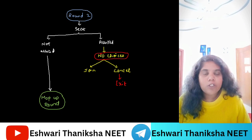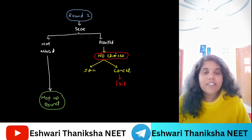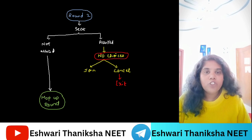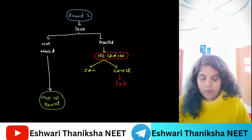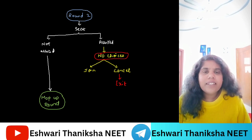Suppose a seat is allotted to you in Round 2, there are no four choices — choices will not be given. Either you have to join the college or you have to cancel the seat. If you are cancelling the seat, there is a penalty for that. So it is better that if you get a seat in Round 2, you go and join the college. Students, about the Mop-Up Round, a detailed video I will be posting later — know the details completely about the Mop-Up Round.